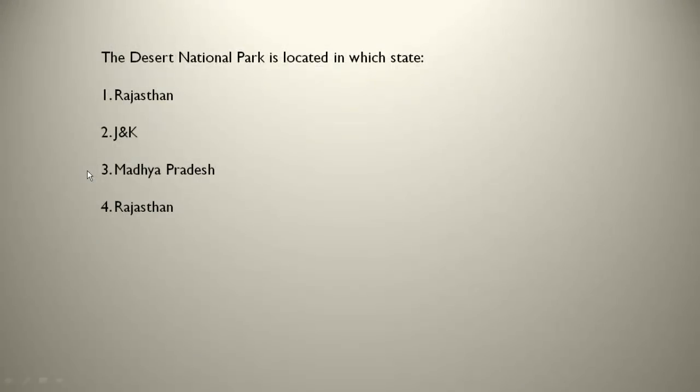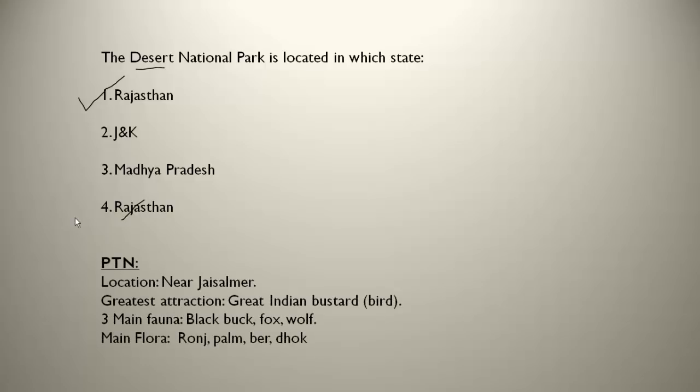The Desert National Park is located in which state? Even if you don't know, you can guess from the name — the answer is Rajasthan, which is famous for deserts. The park is located near Jaisalmer. Its greatest attraction is the Great Indian Bustard, which is a bird. The three main fauna are black buck, fox, and wolf. The three main flora are khejri, palm, ber, and dhok trees.